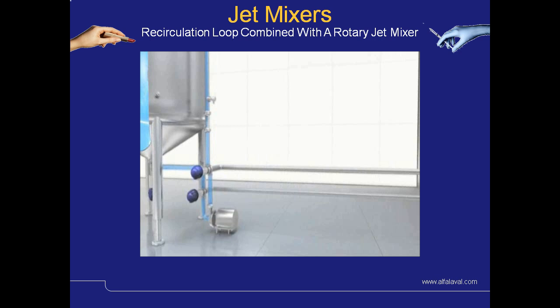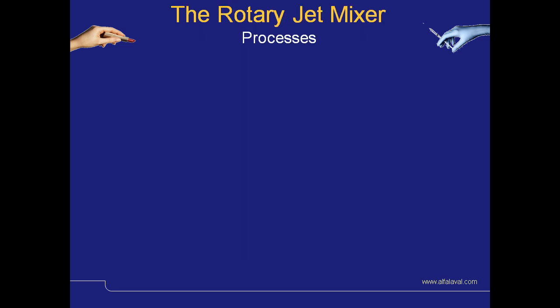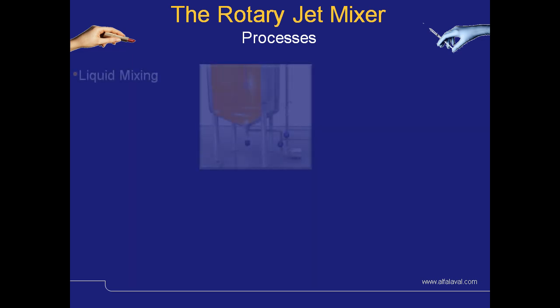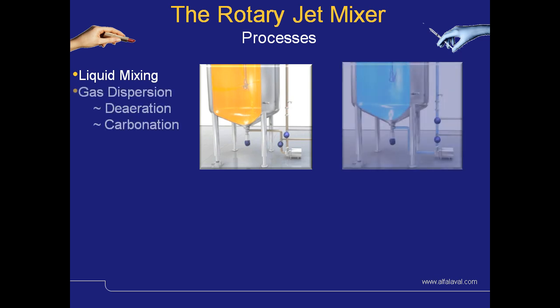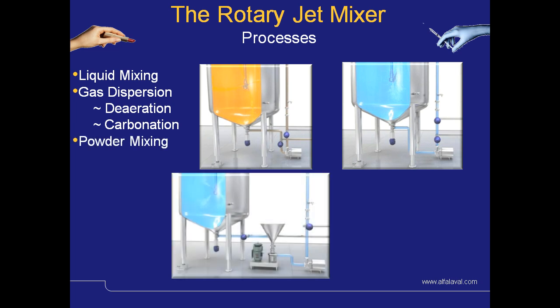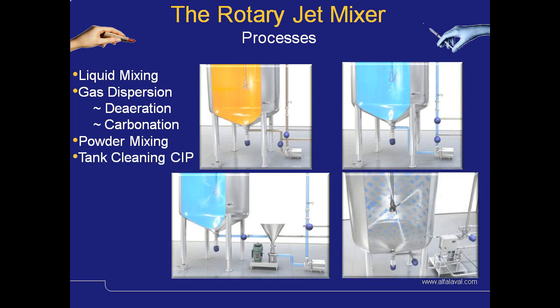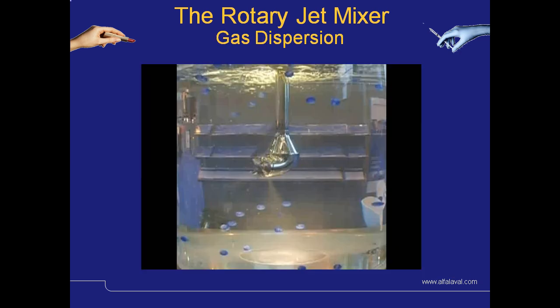The fluid to be mixed is introduced into the top of the tank and into the mixing machine. The dispersion is very quick and simple by means of the rotating jet heads. The processes the jet mixer can be used for include liquid mixing, gas dispersion, de-aeration, carbonation, powder mixing in conjunction with a high shear mixer, and tank cleaning and CIP — all with the same unit. Here we see a quick example of how the introduction of gas into a liquid can be achieved, with very small bubbles and therefore very quick dissipation within the liquid.